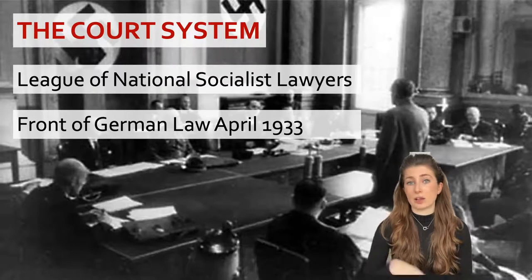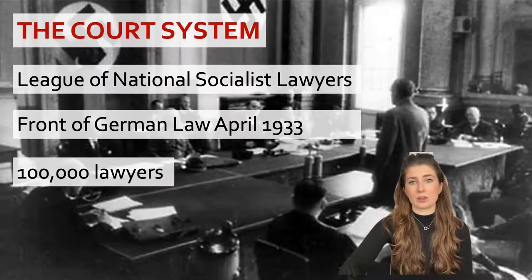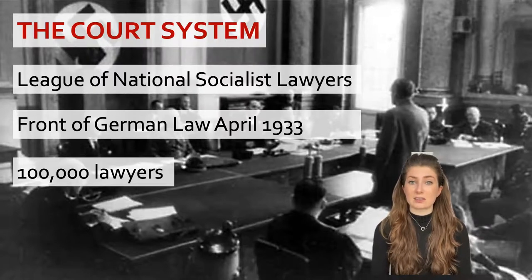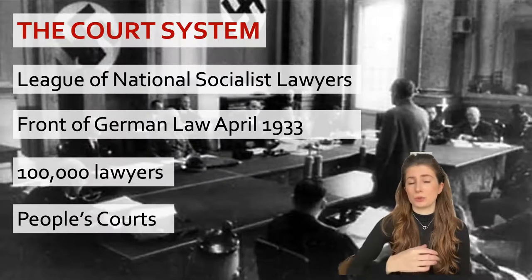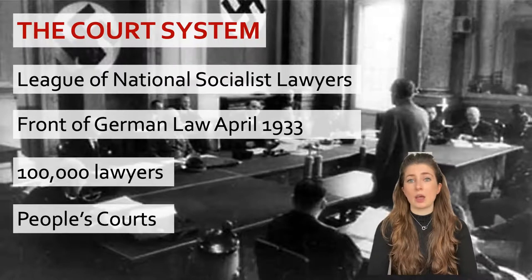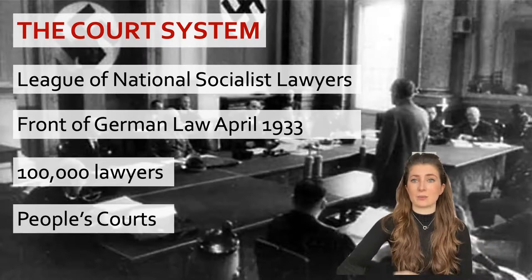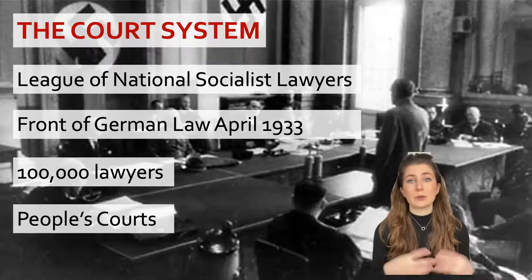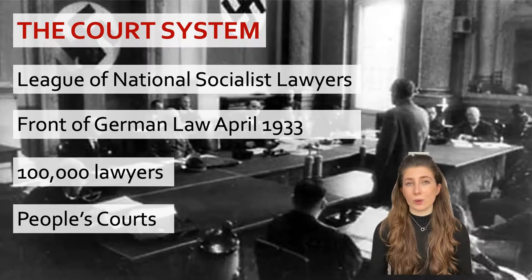Career prospects became dependent on adhering to the regime. 100,000 lawyers gave the Nazi salute and swore to strive as German jurists to follow the course of their Führer. From 1936, the eagle and swastika had to be worn on judges' robes. New special courts were set up in 1933 and people's courts in 1934, running alongside the existing system to deal with political crimes. These had three Nazi judges and two professional ones, with no juries and no right of appeal. With threats and intimidation from the SA and SS, judges and lawyers fell into line.